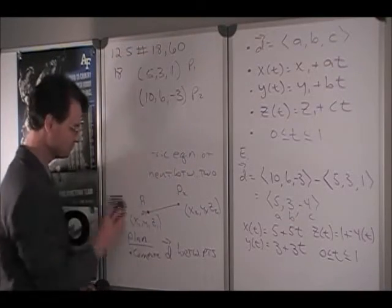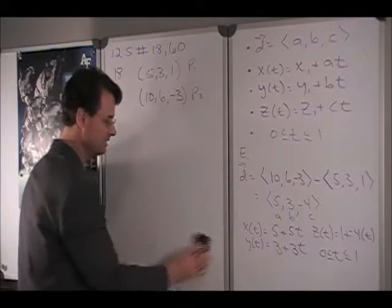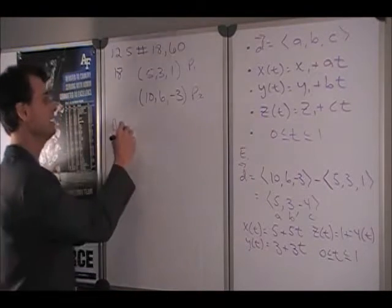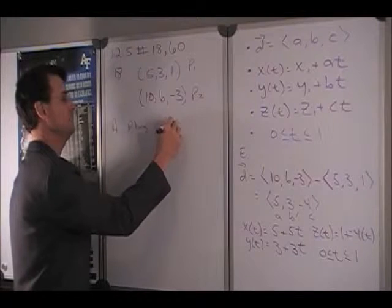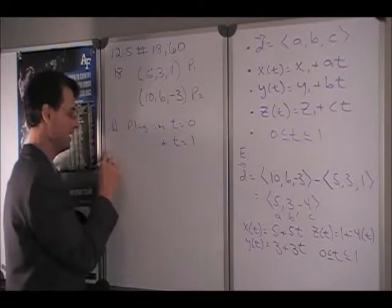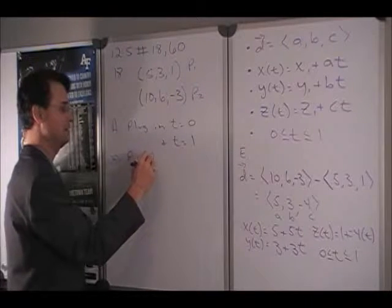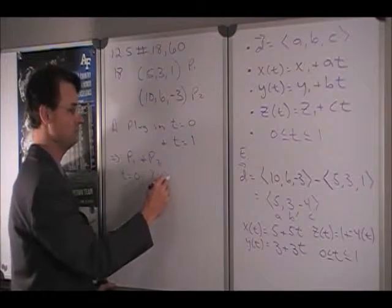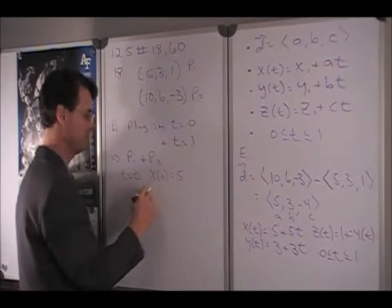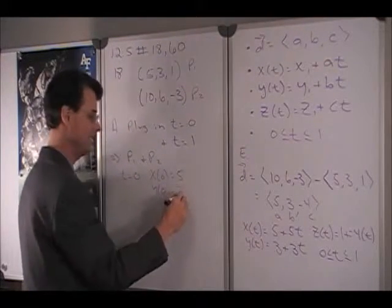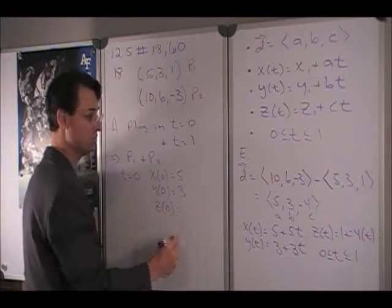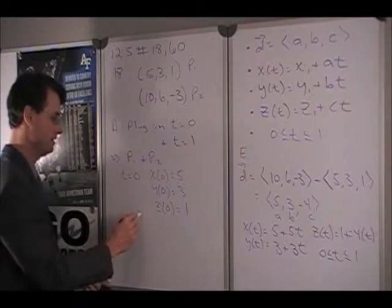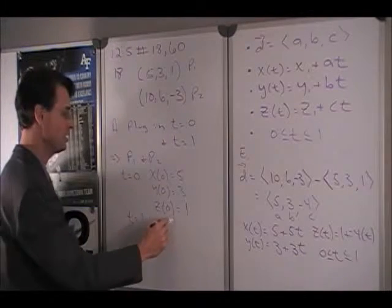Now let's zoom out for a minute and think about how we would assess to double check and make sure that our answer is correct. To assess, let's plug in T equals 0 and T equals 1, and this should yield P1 and P2. For T equals 0, x of 0 is simply equal to 5, y of 0 is simply equal to 3, and z at T equals 0 is simply equal to 1. So we got our starting point back.